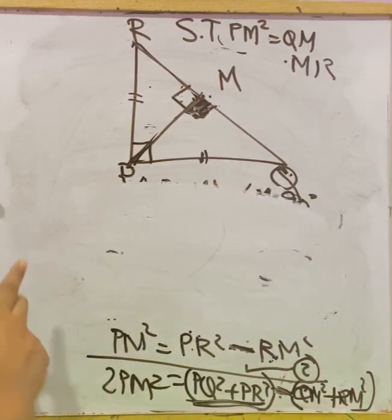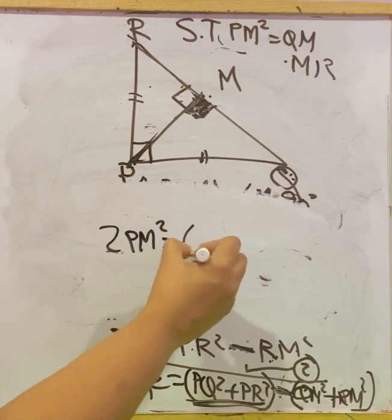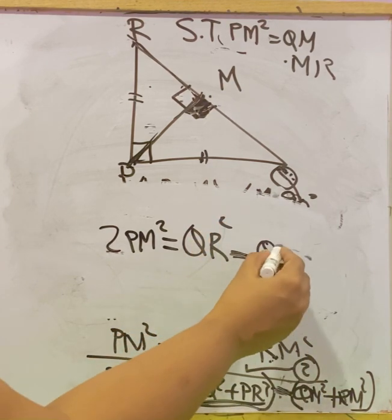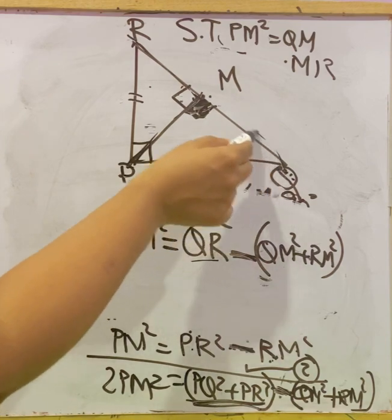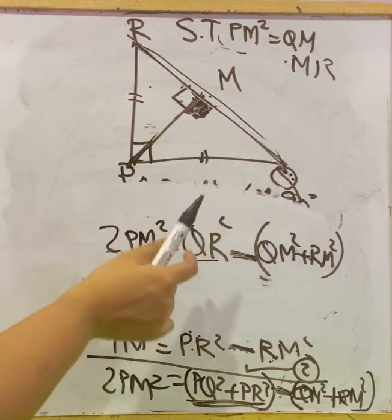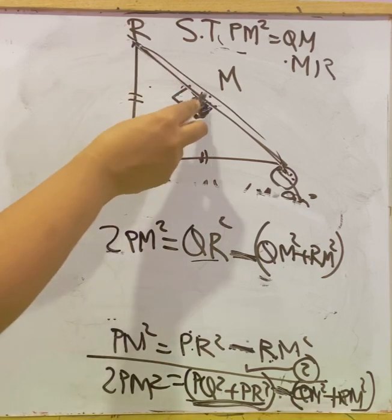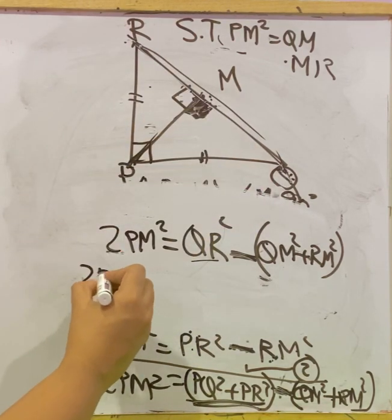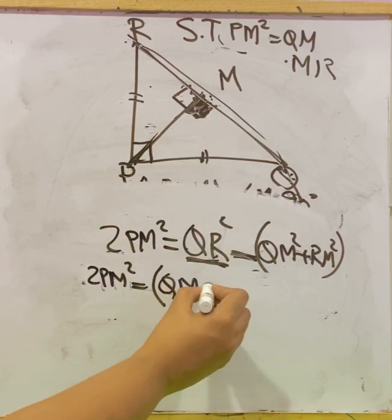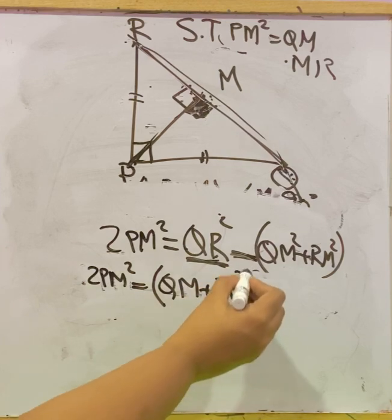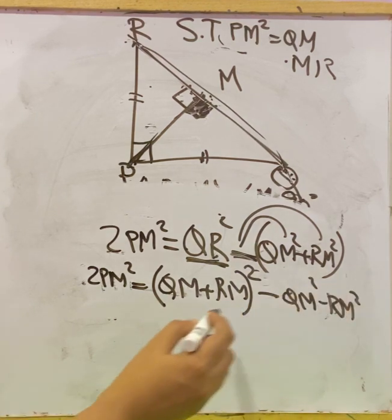From the figure, QR is the total length which is split as QM + MR. So QR = QM + RM, and QR² = (QM + RM)². Substituting: 2PM² = (QM + RM)² − (QM² + RM²). Expanding the bracket gives minus QM² minus RM² distributed from the negative.